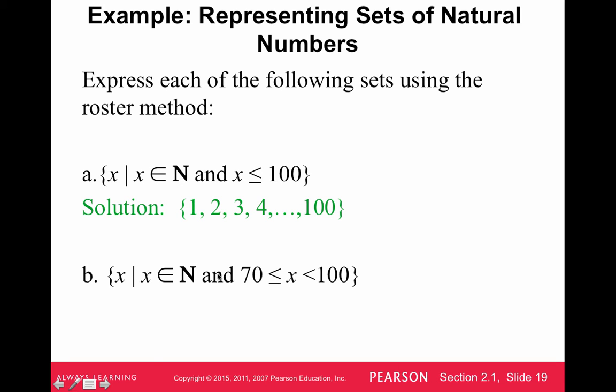Set B is the set of natural numbers that are between 70, including 70, and less than 100, not including 100. So we're going to start at 70, 71, 72, 73, dot, dot, dot, and we'll end at 99 because we're not including 100.